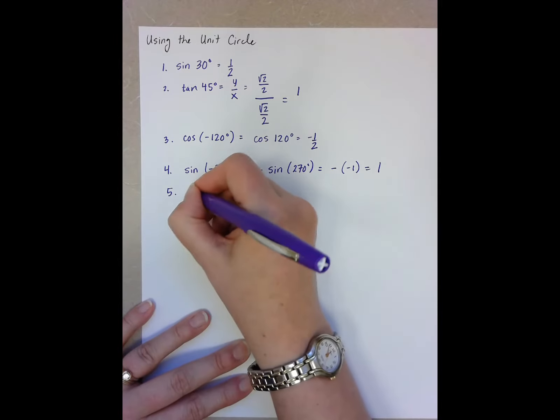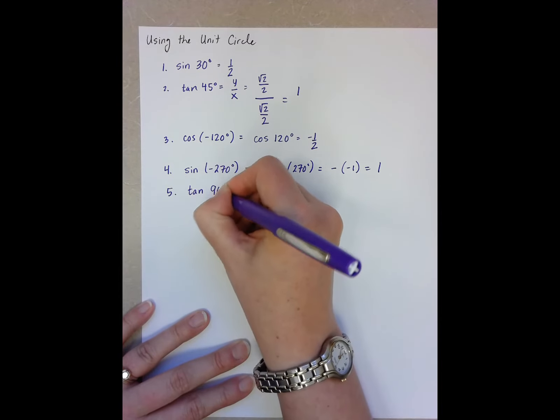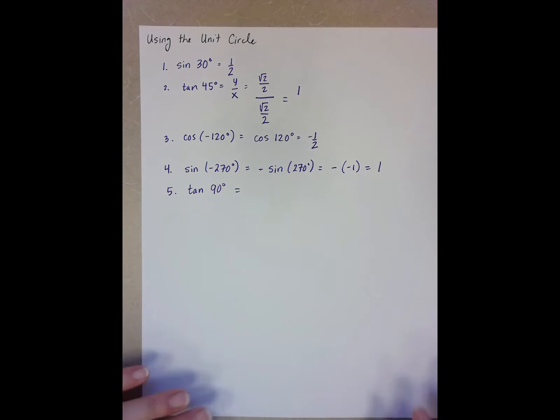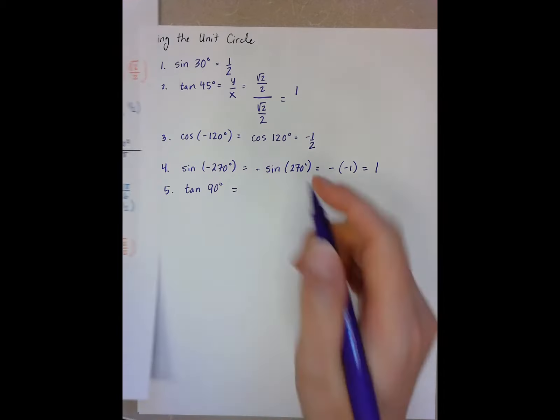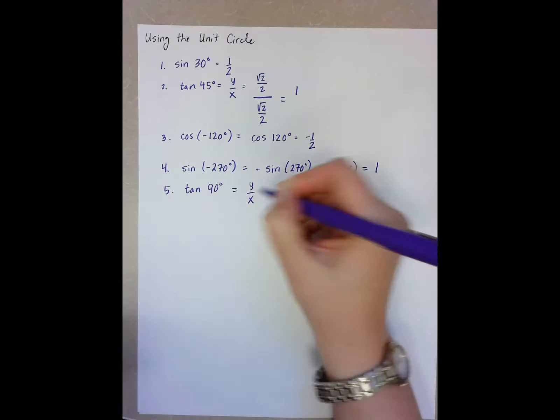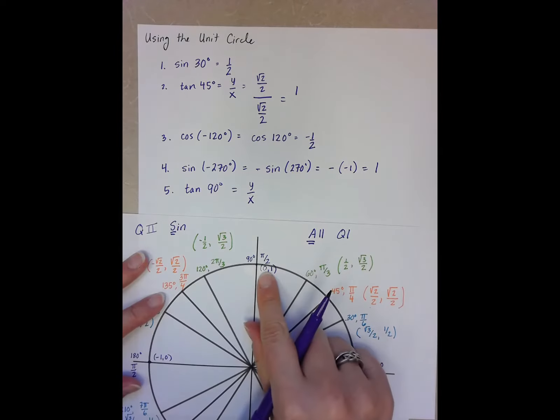Last example using degrees. We'll use some radians because it's nice to see us using both of them. Is tan of 90. So tan is y over x. When I look at 90, my points here,